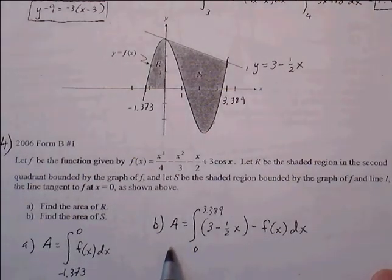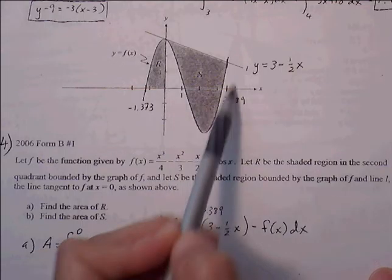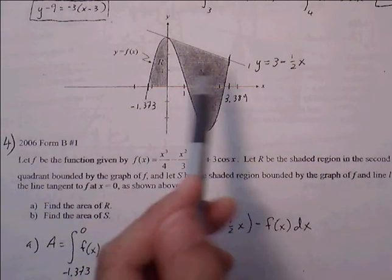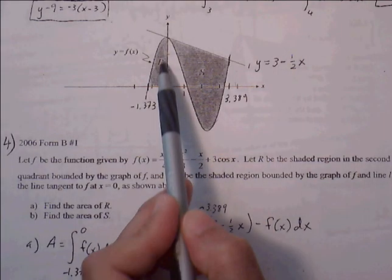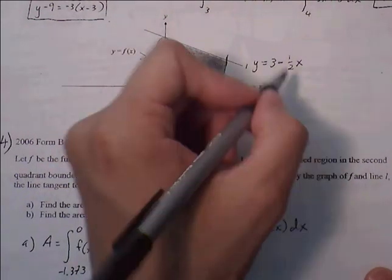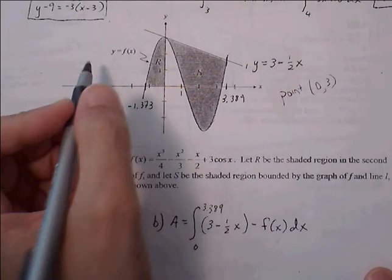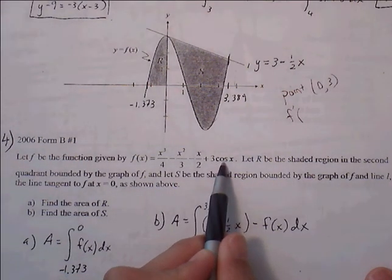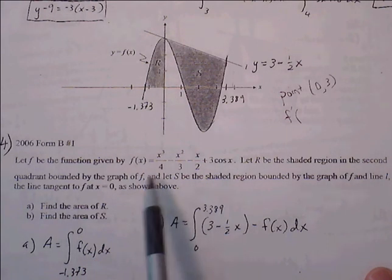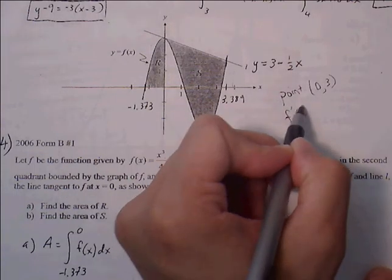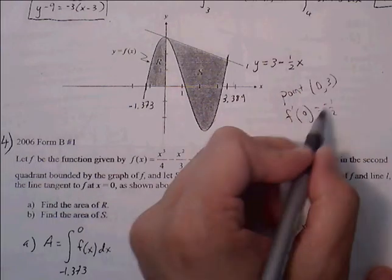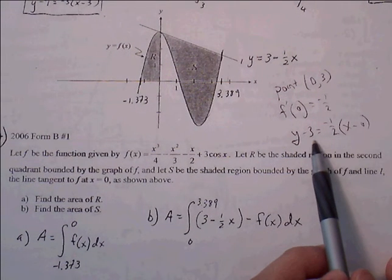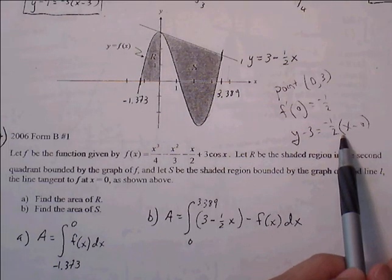For part B, we find the area of S — it's the tangent line minus the curve. The tangent line is 3 minus one-half x. To find that: the ordered pair is at (0, 3). To find the slope, we find the derivative using the power rule — for cosine, that becomes negative sine. Plugging in x equals 0 gives us negative one-half. Writing in point-slope form: y minus 3 equals negative one-half times (x minus 0), which simplifies to y equals negative one-half x plus 3.